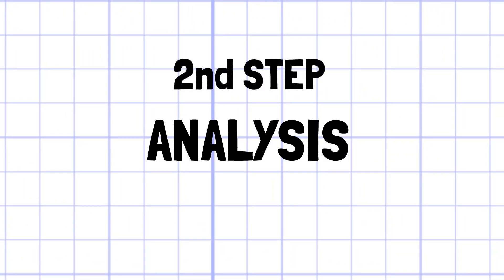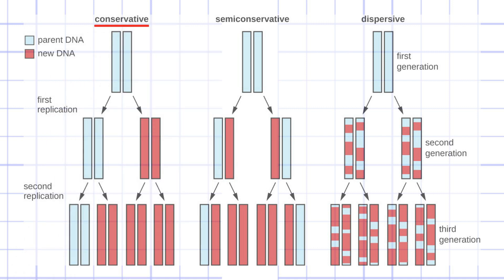The second step is the analysis. If the conservative replication were the truth, the heavy DNA containing nitrogen-15 remained and the DNA molecules produced subsequently were composed of nitrogen-14 only. So after the first division, 50% of the DNA should be on the N-15 band. After the second division, 25% should be on N-15 and 75% should be on N-14.